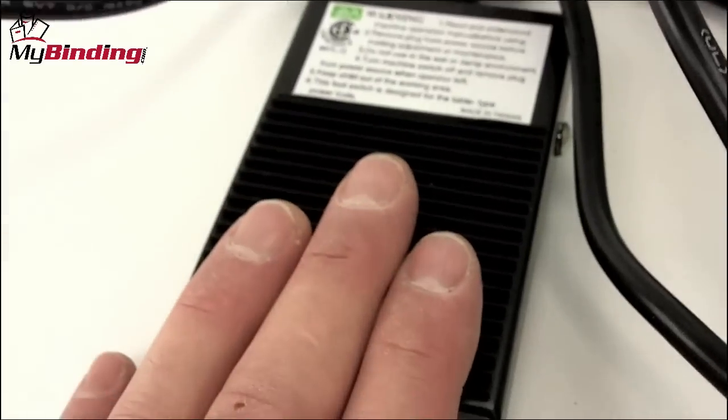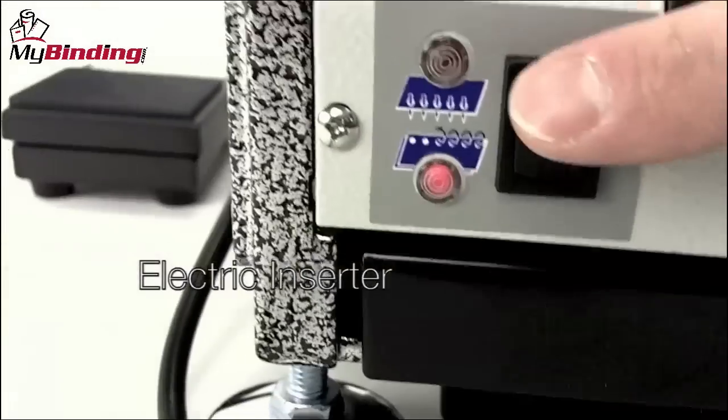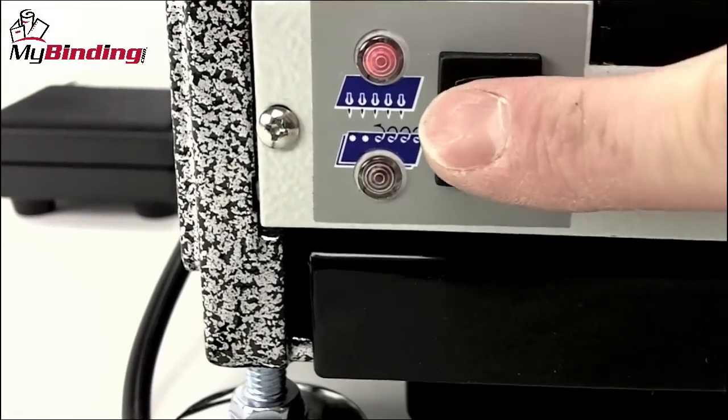One pedal to be operated by hand or foot controls both the punch as well as the inserter. And with the switch on the front of the machine, you toggle between the two.